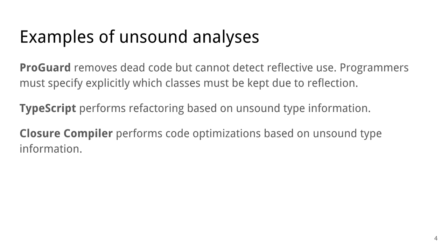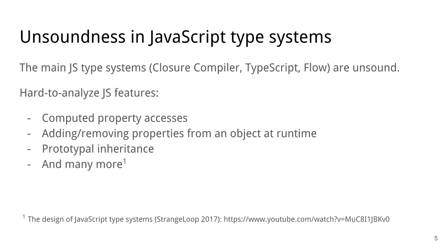Okay, let's spend a second to talk about JavaScript type systems in particular, because I'm going to use JavaScript type checking as the canonical example of an unsound analysis for the rest of this talk, just because it's the area that I'm most familiar with.